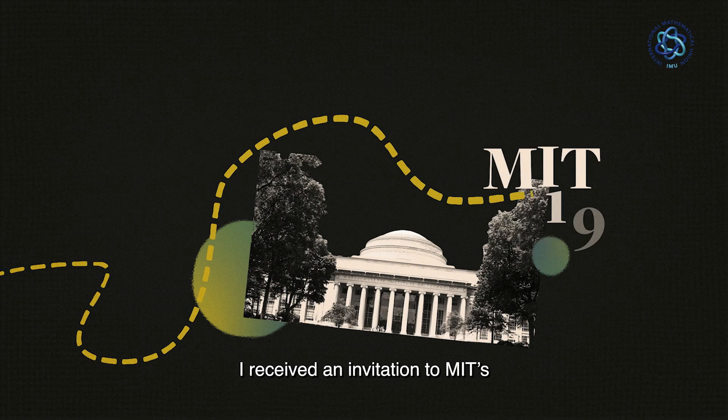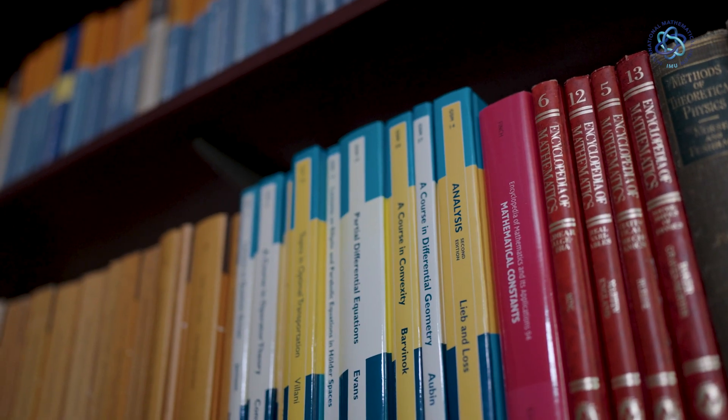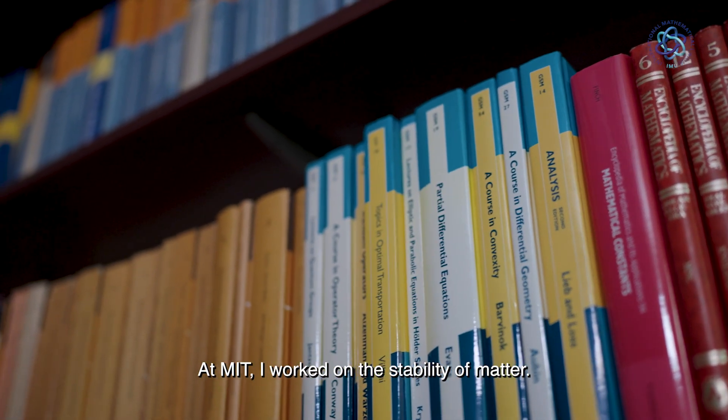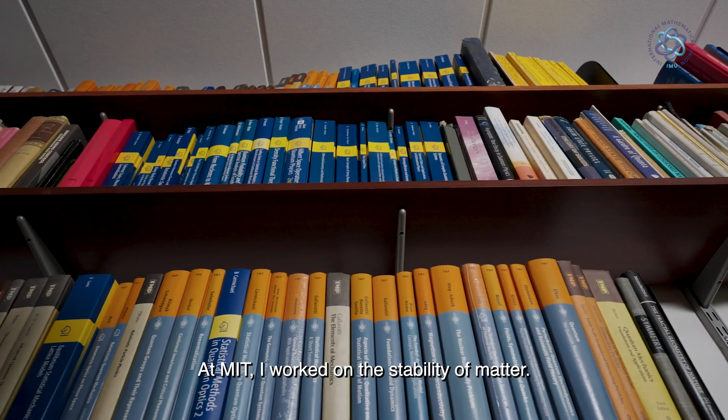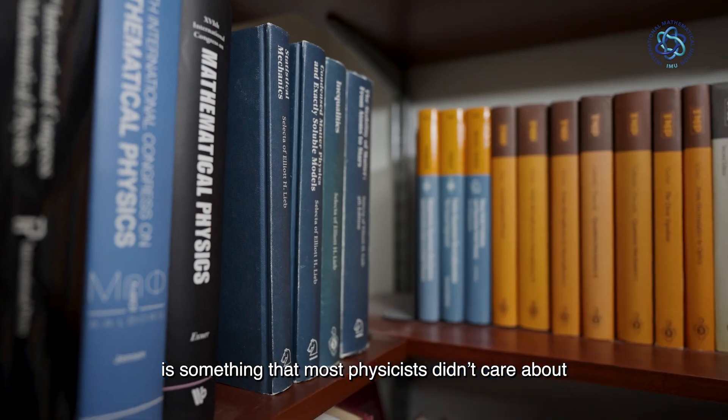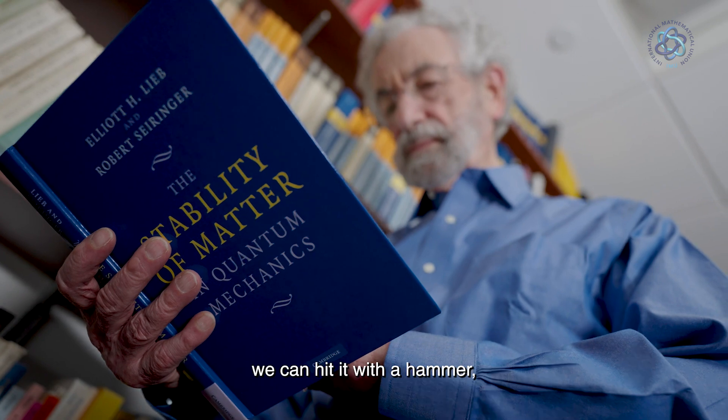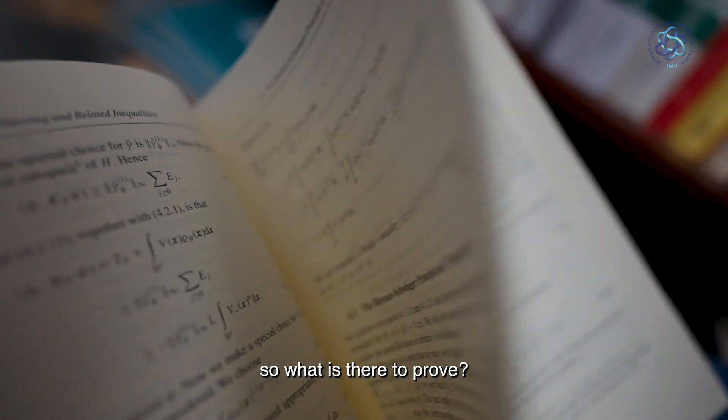I received an invitation to MIT's mathematics department in 1968. At MIT, I worked on the stability of matter. But the stability of matter is something that most physicists didn't care about, because after all, matter is stable. We can hit it with a hammer. So what is there to prove?